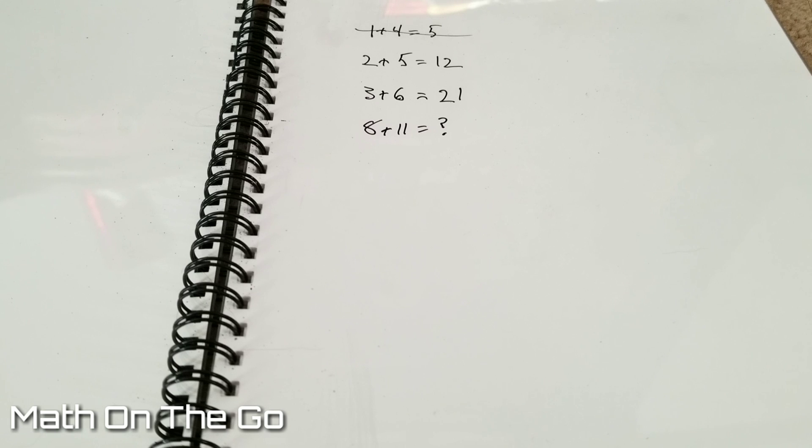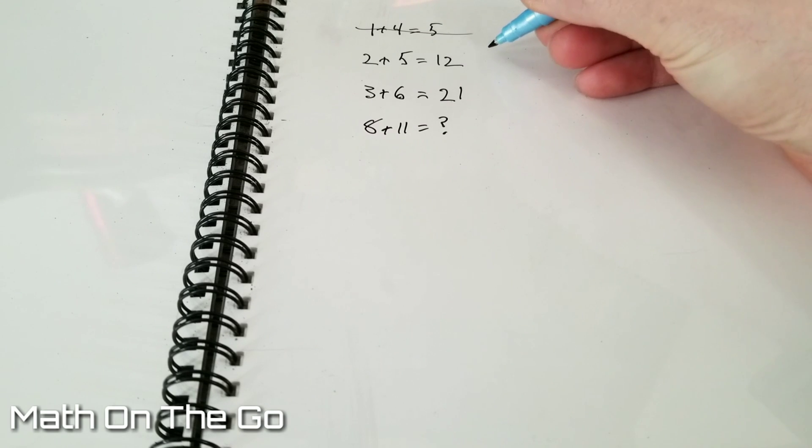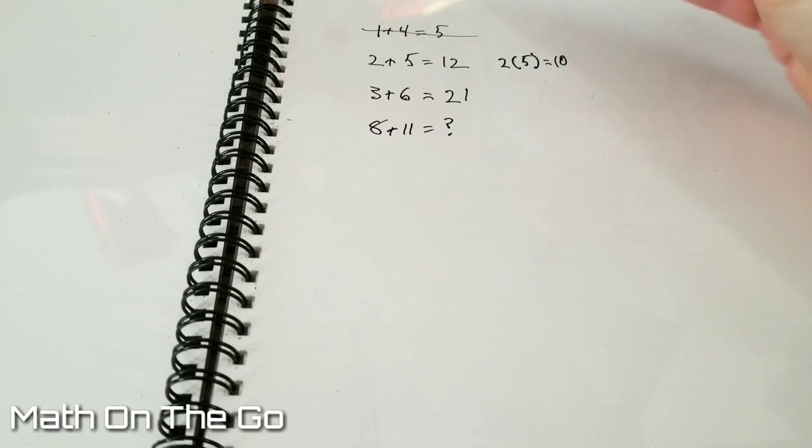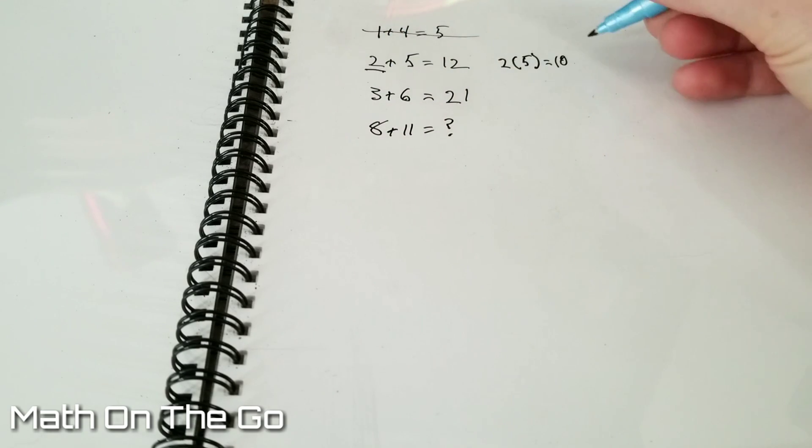So what's going on here is we take the first digit and the second digit, and we multiply them together. So for this one, we take 2 times 5 equals 10, and then we take the first digit and we add it, which equals 12. And that's how these are found.